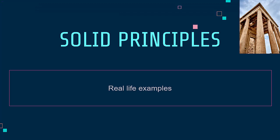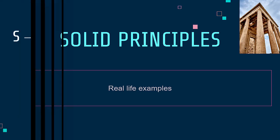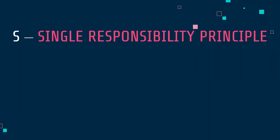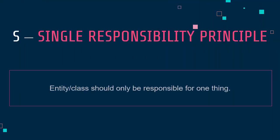SOLID is not one but a combination of five different principles. Let me start by explaining each one of them with a real-world example. The first principle is the Single Responsibility Principle. It defines that each class or entity should only be responsible for one thing, and it should not be populated with other functionalities that are not related to the main purpose of that entity.